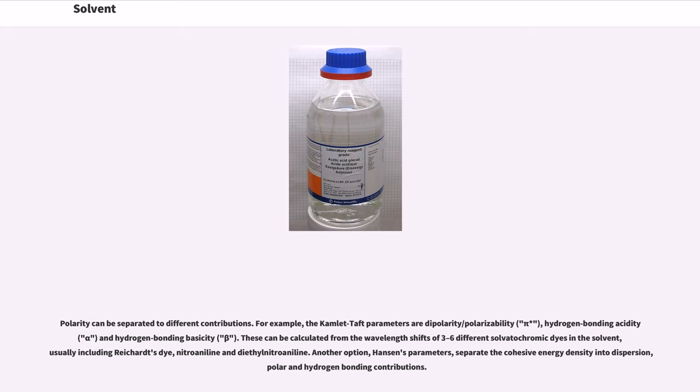These can be calculated from the wavelength shifts of three to six different solvatochromic dyes in the solvent, usually including Reichardt's dye, nitroaniline and diethyl nitroaniline.